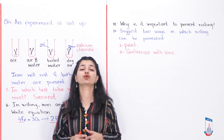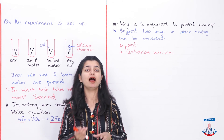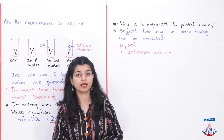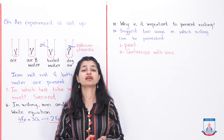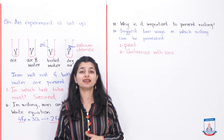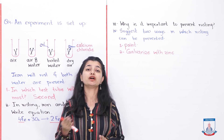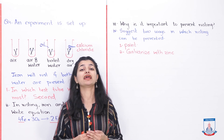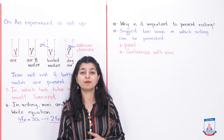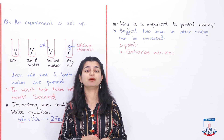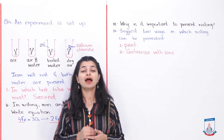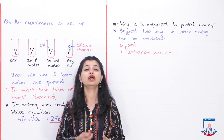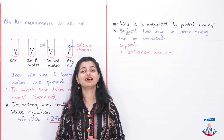We finished question number 3 and 4. In question number 3 you had to explain different reactions — how magnesium, iron, or sodium react with sulfuric acid, air, or water, and what the outcomes are. The purpose is to understand how metal reactions differ with air, water, and different substances. In question number 4 we talked about iron rusting — we differentiated where iron will rust, why we want to prevent rusting, and how we can prevent it. We will talk about question number 5 onwards next. Looking forward to seeing you there. Allah Hafiz.